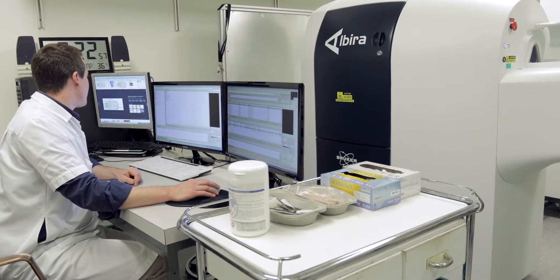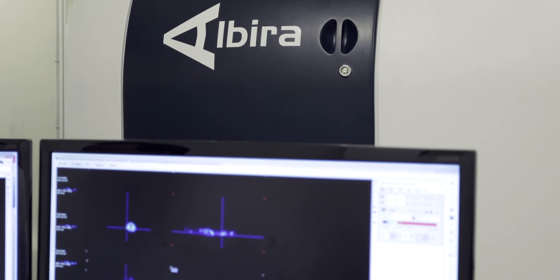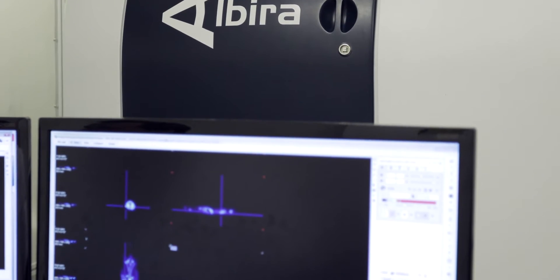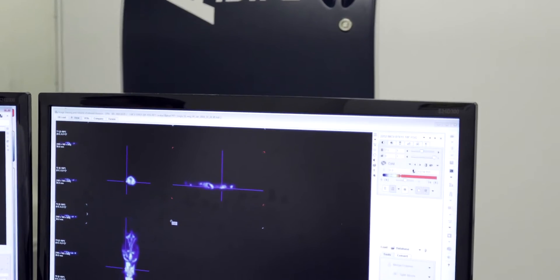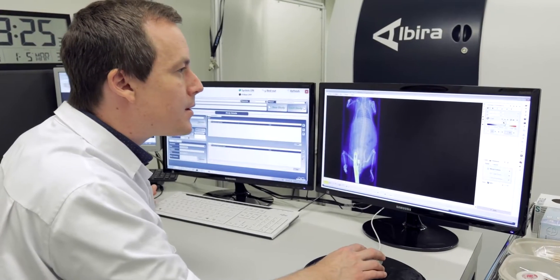PET imaging is a modality in nuclear medicine using positron emission tomography with a beta plus emitter called positron in order to look at the functional imaging of radiotracers and radiopharmaceuticals.